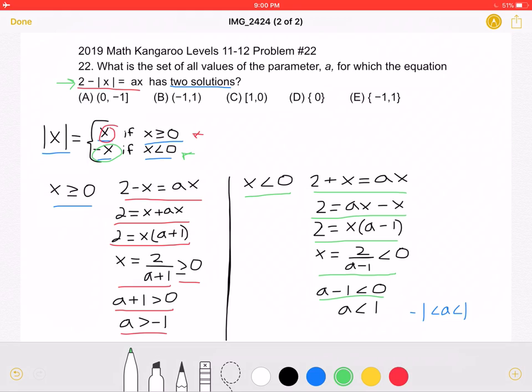Adding 1 to both sides, we would get that A is less than 1. And combining our two answers, we would get that A must be between negative 1 and 1, but not including negative 1 or 1, which means that answer choice B must be correct.